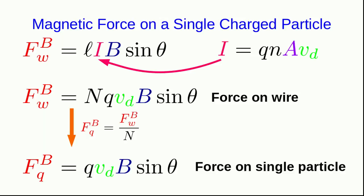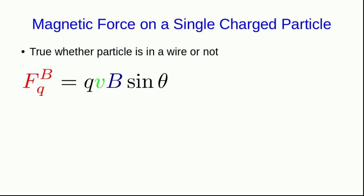Well, there's no reason that this should only apply to particles that are moving inside a wire. And indeed, experimentally, you can show that this is true whether the particle is in a wire or not. And this is the magnitude. Given the sine theta in this expression, and that we know the magnetic force on a wire can be expressed in terms of a cross product, you might suspect that this one can be written in terms of a cross product. And indeed, it can. So in full vector form, here is the magnetic force on a moving charged particle.